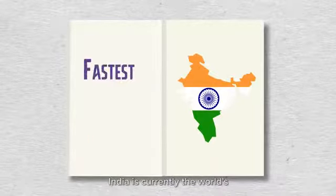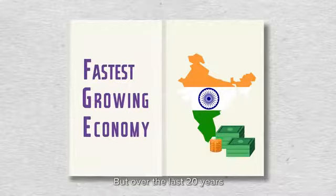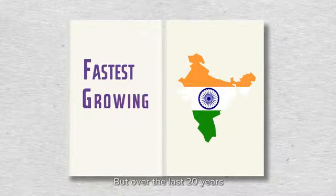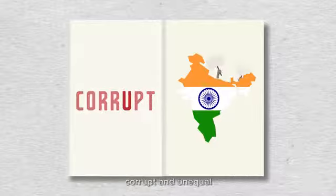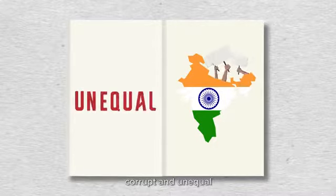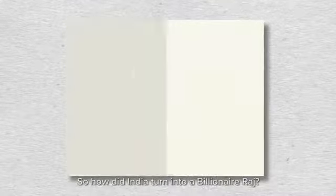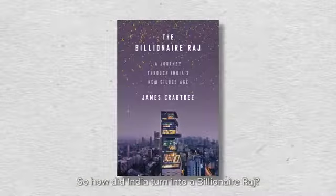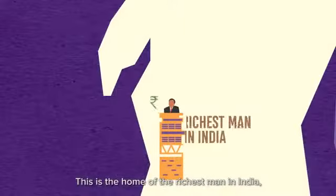India is currently the world's fastest growing major economy, but over the last 20 years it has also become one of the most corrupt and unequal. So how did India turn into a billionaire Raj?